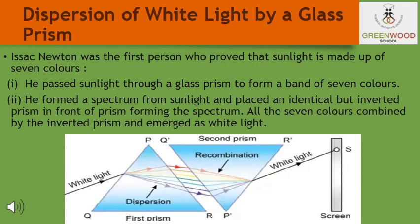Sir Isaac Newton was the first to use a glass prism to obtain the spectrum of sunlight. He tried to split the colors of the spectrum of white light further by using another similar prism; however, he could not get any more colors. He then placed a second identical prism in an inverted position with respect to the first prism, as you can see in the figure. This allowed all the colors of the spectrum to pass through the second prism.